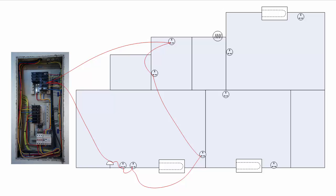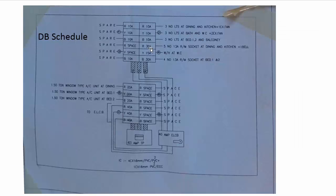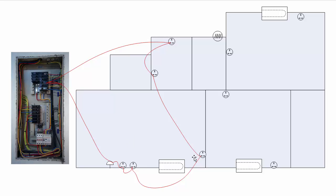The 30 ampere MCB is used to supply five 13 ampere ring main sockets at dining and kitchen, including the bell. So these are the five socket outlets in the hall and kitchen, and the ring also includes the bell. The connection starts from the 30 ampere MCB, goes to the line terminal of the bell, then to the first socket, second socket, third, fourth, fifth, and finally comes back to the same terminal on the MCB to complete the ring.